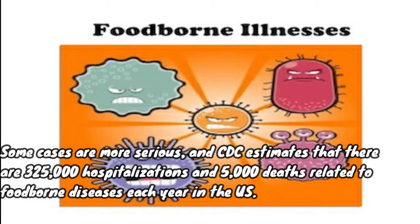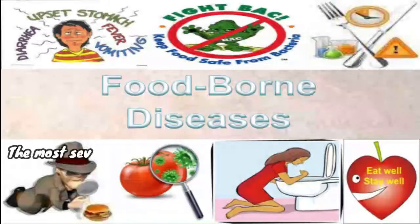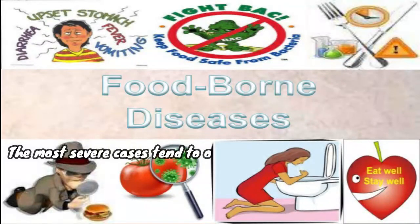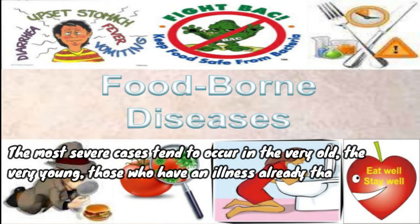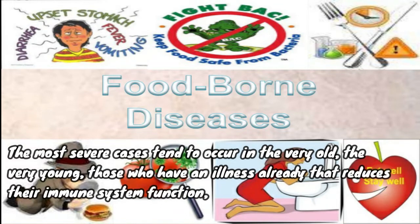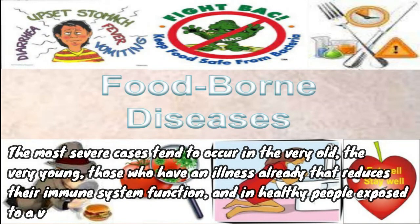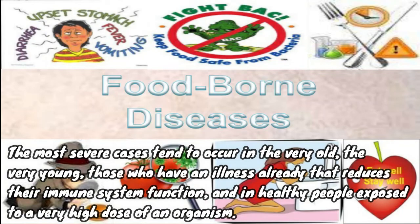The CDC also estimates 5,000 deaths related to foodborne diseases each year in the U.S. The most severe cases tend to occur in the very old, the very young, those who already have an illness that reduces their immune system function, and in healthy people exposed to a very high dose of an organism.